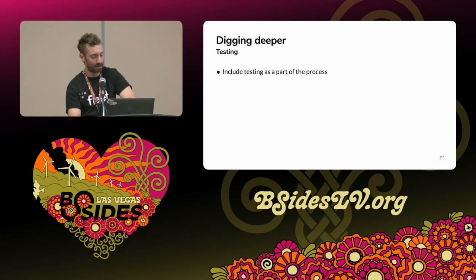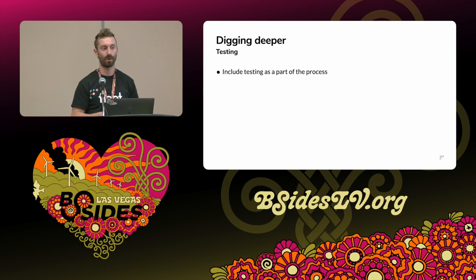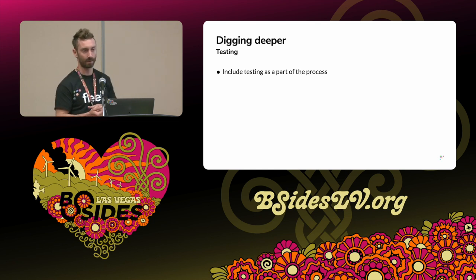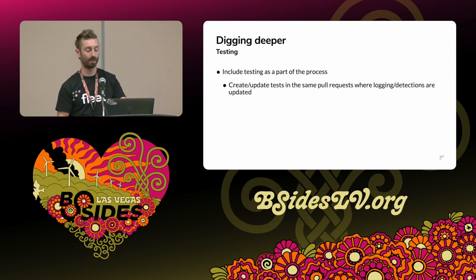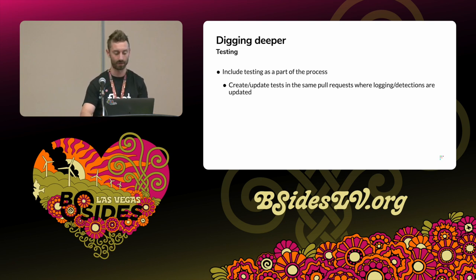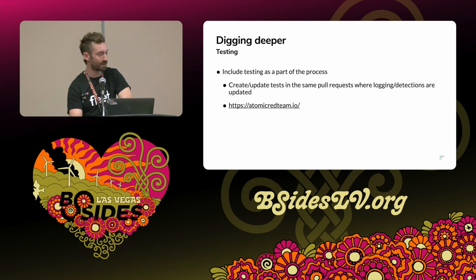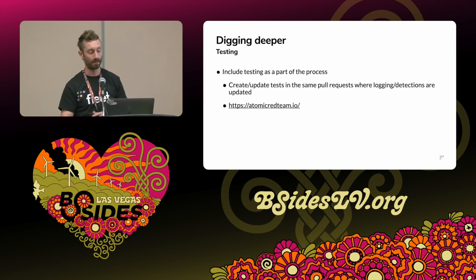And testing, I think, is super important. Include testing as part of the process. We saw in Palantir's framework they talked about validation. It's great to request that as someone builds these things, they document how it was tested and how it can be tested in the future — you can put that kind of thing in the same pull request and discuss between the reviewer and the creator how this was done and how it will be maintained. One tool that might be interesting to look into is Atomic Red Team — also free and open source — which helps to simulate attacks and might be useful if you're trying to build testing and validation around the detections you've built.